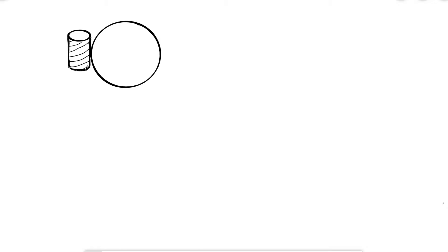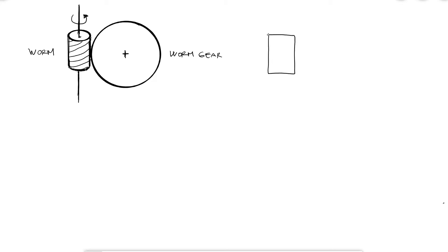Let's begin by looking at a standard worm and worm gear setup. The worm can either drive the worm gear or the worm gear can drive the worm. Let's say the worm is driving the worm gear in this example as it is rotating counterclockwise. As the front face rotates towards the right, I would see that the teeth are moving down.